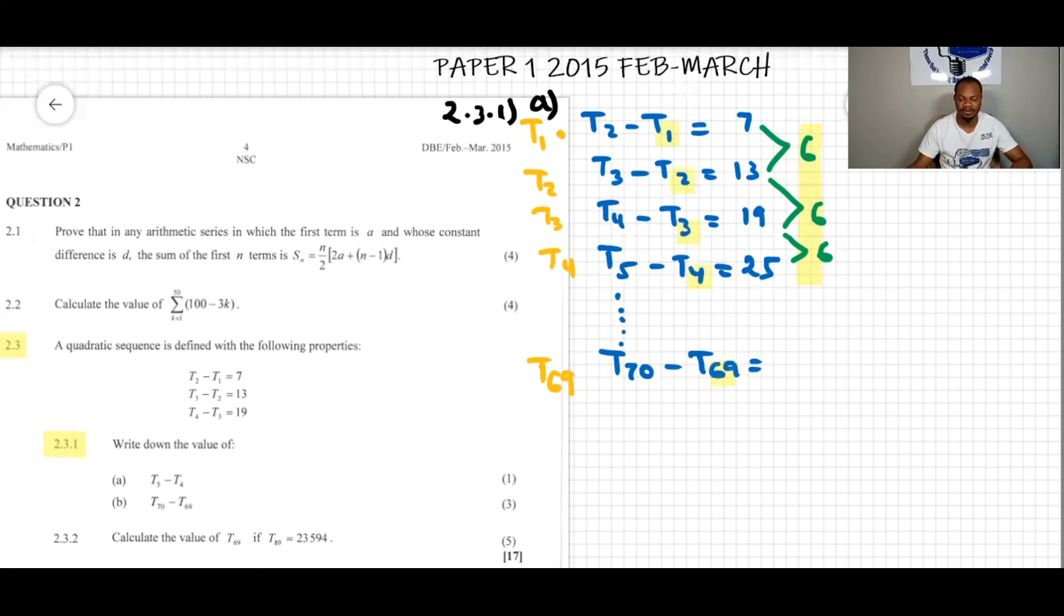We can use the arithmetic sequence formula which is given by Tn equals a plus n minus 1 times d. For term 69, we have n which is 69, the first term a is 7, and d is 6.